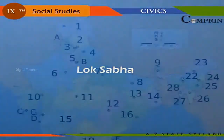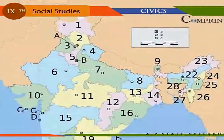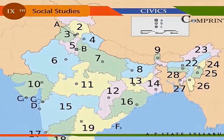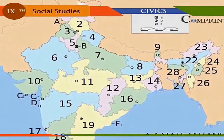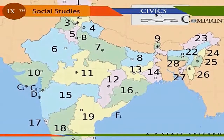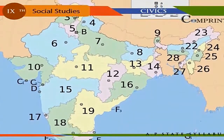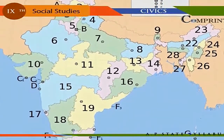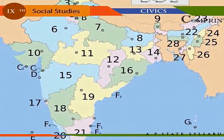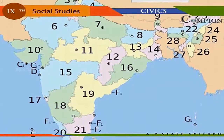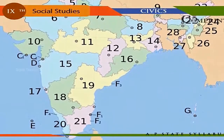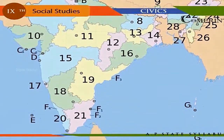The Lok Sabha is the house of representatives. The members of this house are the representatives of the people, elected directly by the voters through universal adult franchise. The representatives are elected from all the states and union territories in the country. The number of members of Lok Sabha from each state is decided on the basis of the population of the state.